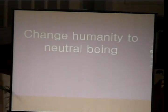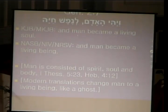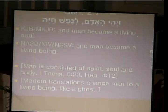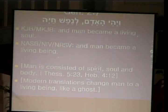Another change is that modern translations changed humanity to a neutral being. In Genesis chapter 2:7, the Hebrew says 'Va-Yohi ha-Adam le-Nephesh Chaya' — Nephesh Chaya meaning 'a living soul.' But modern translations changed it to 'a living being.' The King James Bible correctly says 'a man became a living soul.' However, NIV, the New American Standard Bible, and the RSV changed it to just 'being.' The human being consists of spirit, soul, and body, according to 1 Thessalonians 5:23 and Hebrews 4:12.